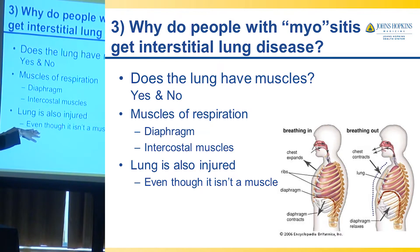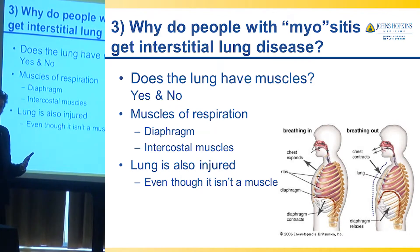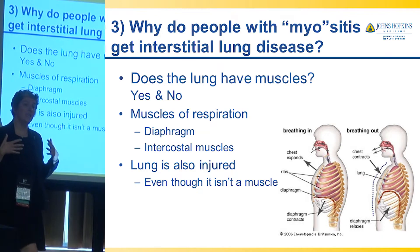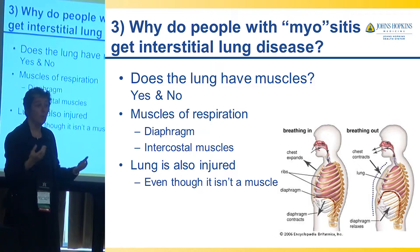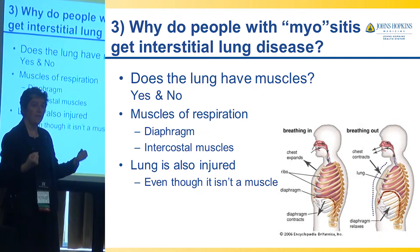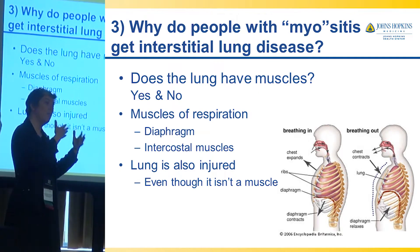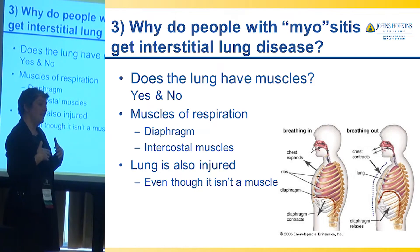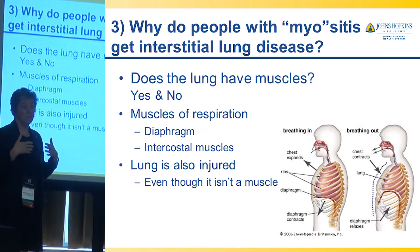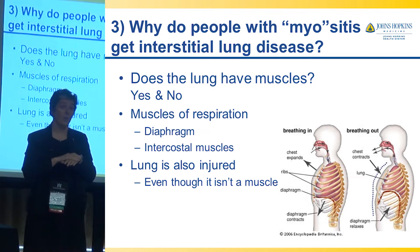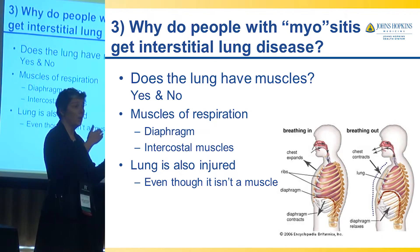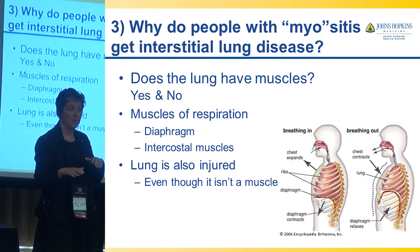The lung can also be injured even though it doesn't contain muscle tissue. When myositis was named, it was named because people became weak — their muscles were weak and sore — so it was called myositis. Then we realized some people had skin rash also, so it was called dermatomyositis because it involved the skin as well as the muscle.